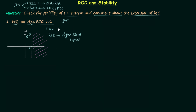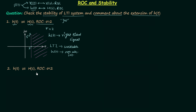Now we comment about the stability of the LTI system. You can see in the ROC that the imaginary axis is not included. This means our LTI system is unstable, and h(t) is not absolutely integrable. Now we will move to the second part of the question.